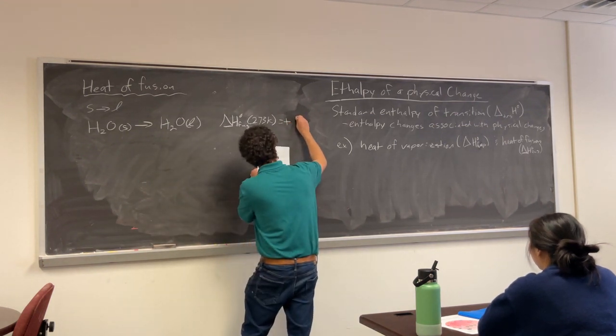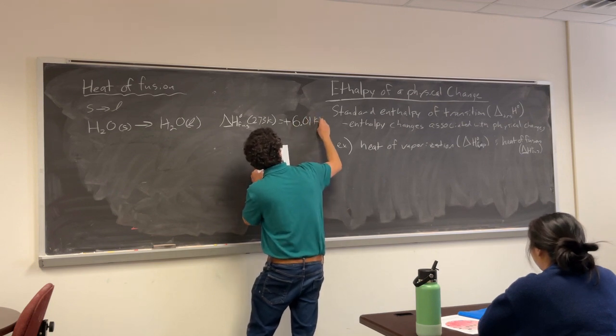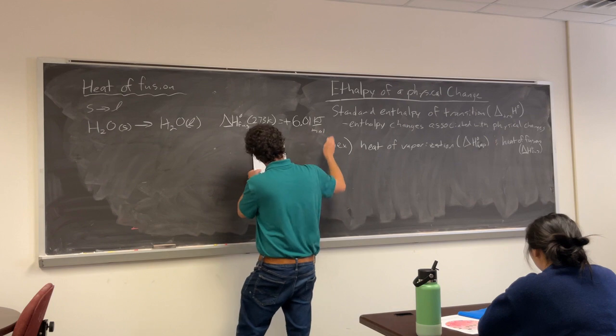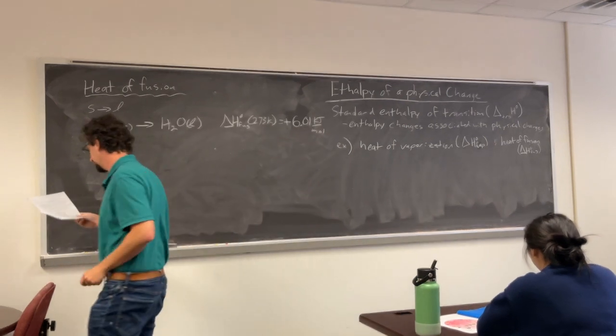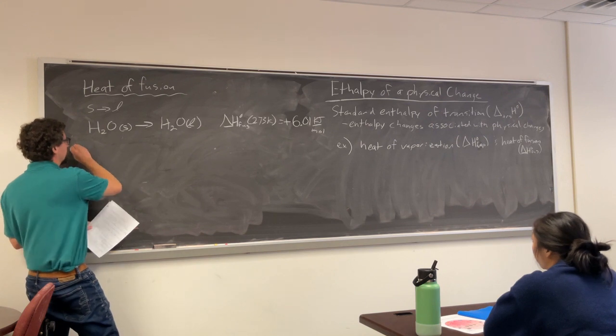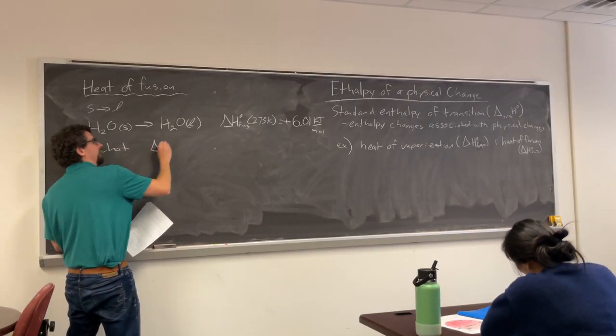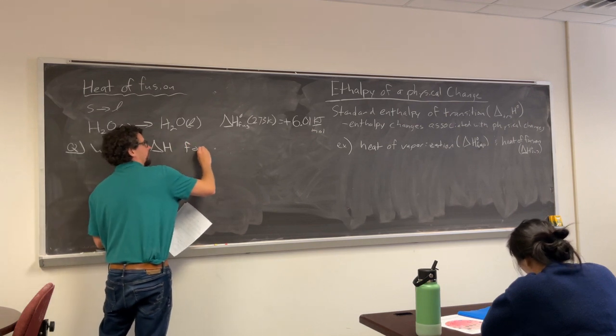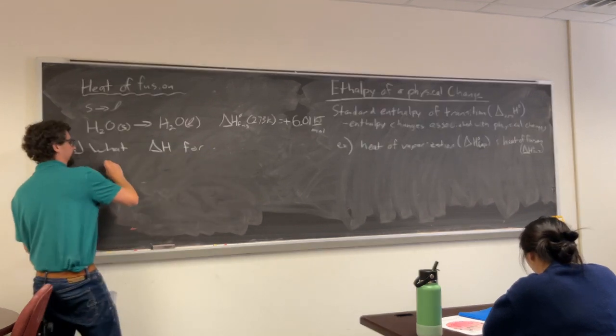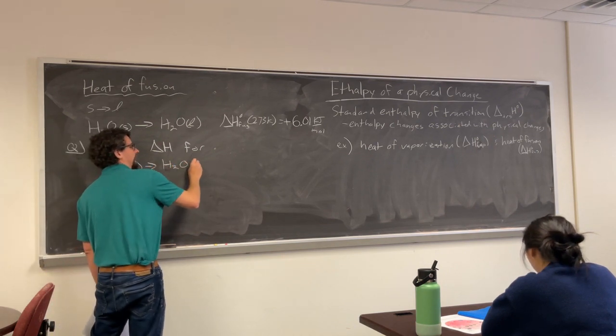Yeah. Anybody know the value of it? Impress. 6.01 kilojoules. The question. What is delta H for H2O liquid going to H2O solid?